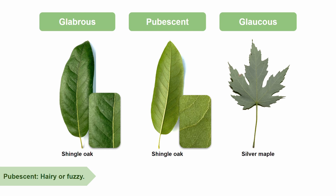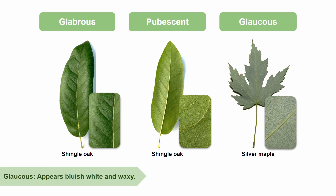Now that we're familiar with glabrous and pubescent, it's time to tackle glaucous. A glaucous leaf is one that appears bluish white and waxy. An example of a glaucous leaf would be the underside of an Acer saccharinum, otherwise known as silver maple leaf. You can see that it has that pale coloration to it.